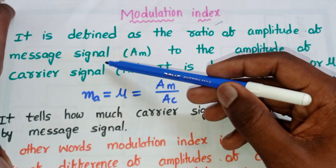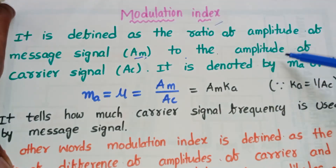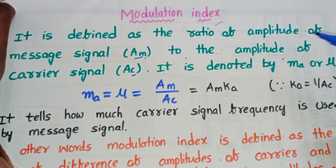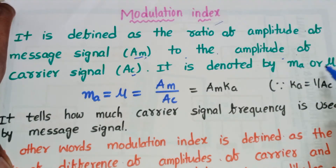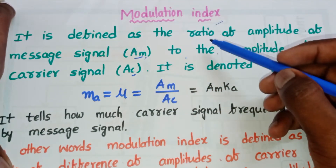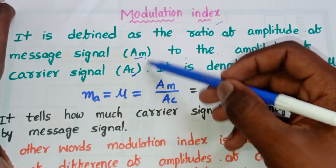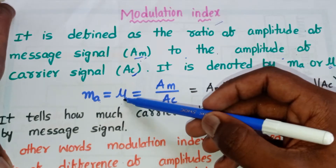The modulation index is defined as the ratio of the amplitude of the message signal (Am, where m means message signal) to the amplitude of the carrier signal (Ac, where c means carrier). It is denoted by 'ma' or 'mu'. So, ma = mu = Am / Ac.